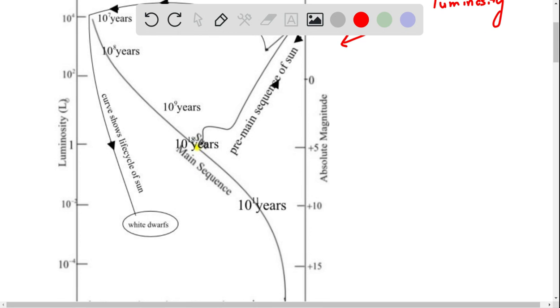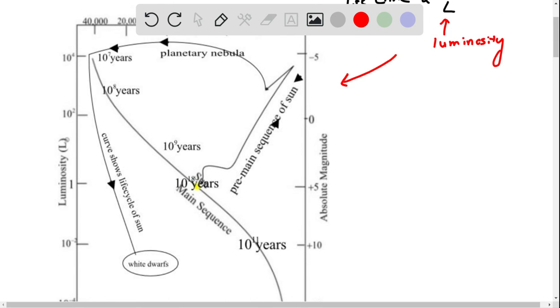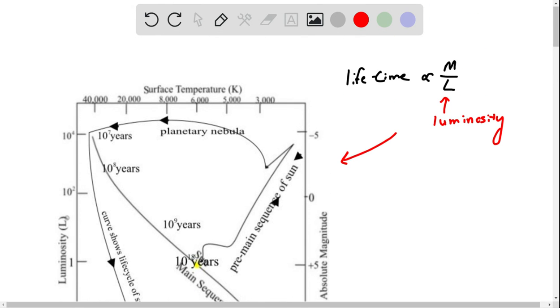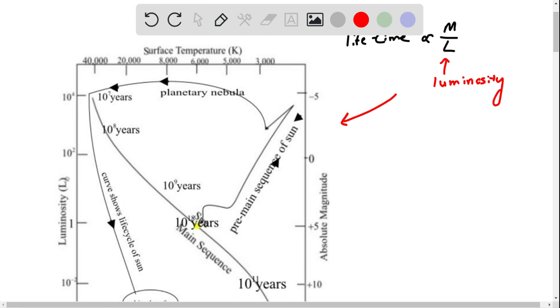So we have white dwarfs as about the last one, and we can see that it starts out from the main sequence here at about 10^10 years, and then it travels to the right, and then it goes up, down, and goes all the way to planetary nebula. So the above figure shows that the main sequence stars have longer lifetime than all other stages.